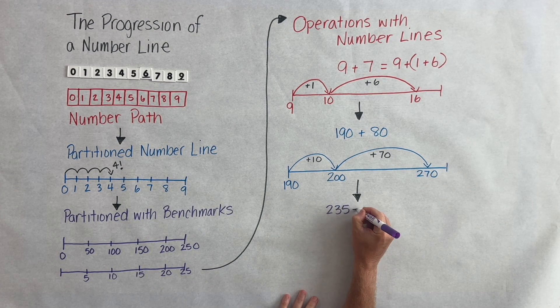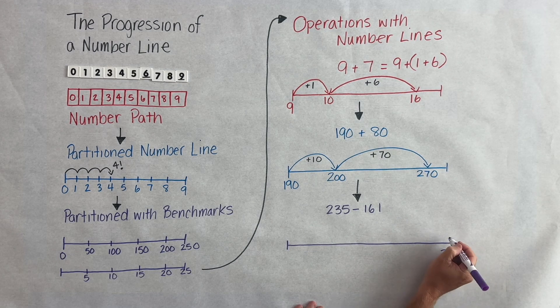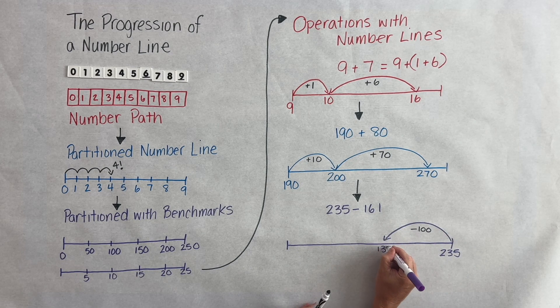But it also works with subtraction and it's important that students see that a number line can work in both ways. So here we have 235 and we want to count back 160.